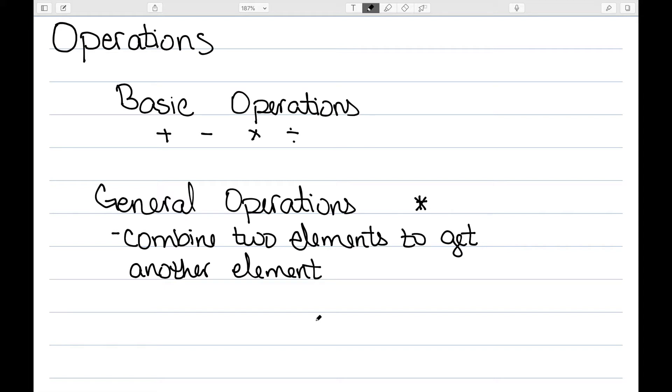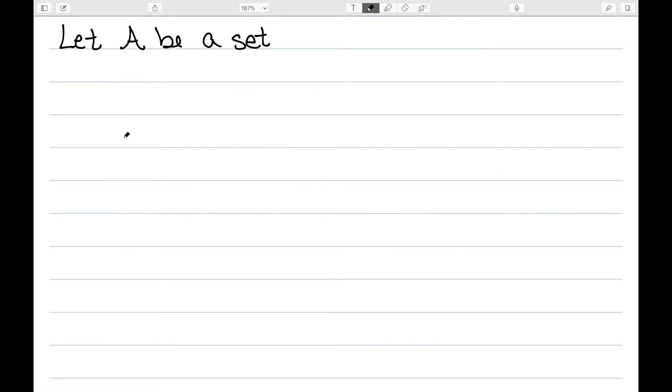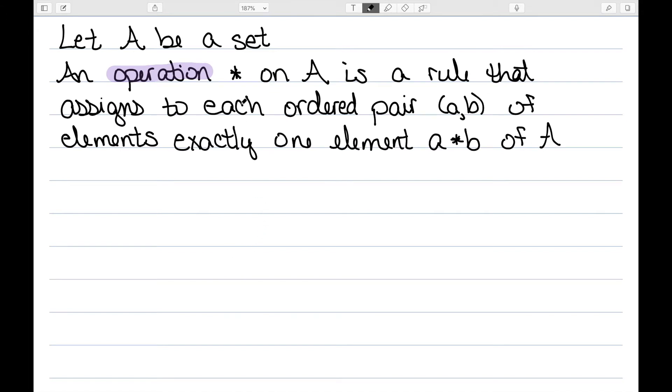So, let's try to be a little more precise about this definition of an operation. Let's let A be any set. An operation, which, once again, we're going to denote by the star. So, an operation star on A, my set, is a rule that assigns to each ordered pair, a, b, of elements, exactly one element, a star b, of A. So, I'm going to input an ordered pair, and I output another element of A.